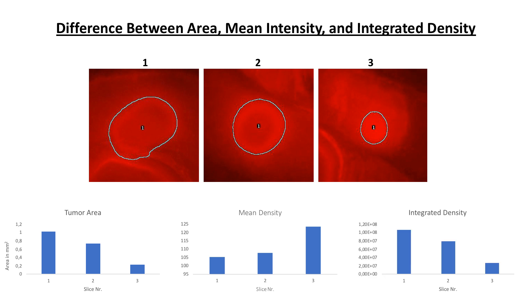In contrast, the integrated pixel density considers the area of the ROI which is why the image on the left with the largest ROI has the highest integrated density. Interestingly, the ROI with the highest mean pixel intensity has the lowest integrated density. And this should be no surprise as the integrated density is equivalent to the product of area and mean pixel intensity.